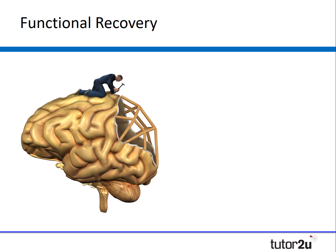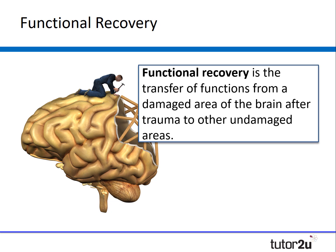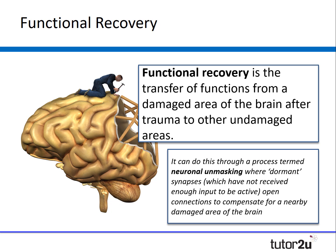Let's take a look at functional recovery. Functional recovery is the transfer of functions from a damaged area of the brain after trauma to other undamaged areas. The way functional recovery can take place is through a process termed neuronal unmasking, which is where dormant synapses which have not received enough input become activated and open connections to compensate for nearby damaged areas of the brain. This allows new connections in the brain to become activated and therefore recovers any damage occurring in a specific region.